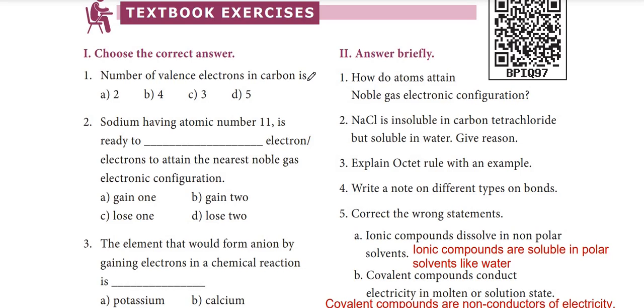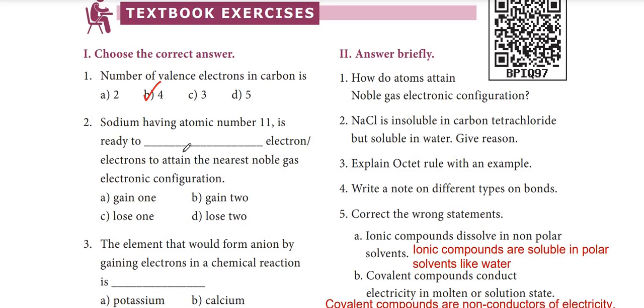First Roman, choose the correct answer. First question: number of valence electrons in carbon is? The valence electron of carbon — the outermost shell electron — is 4.